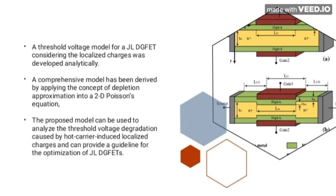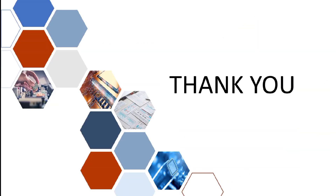A threshold voltage model for a junctionless double gate field effect transistor considering the localized charge was developed analytically. The comprehensive model has been derived by applying the concept of depletion approximation into the 2D Poisson's equation. The proposed model can be used to analyze threshold voltage degradation caused by hot carrier induced localized charges and can provide a guideline for the optimization of junctionless double gate field effect transistors.